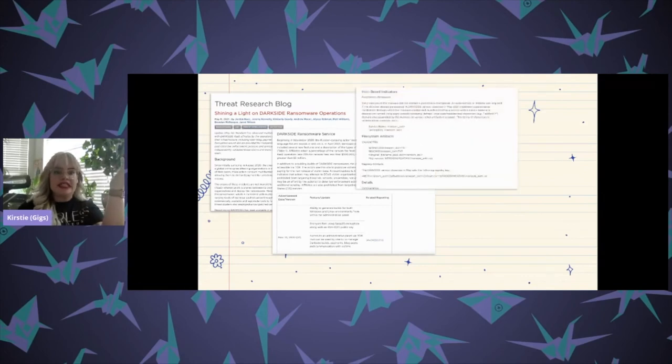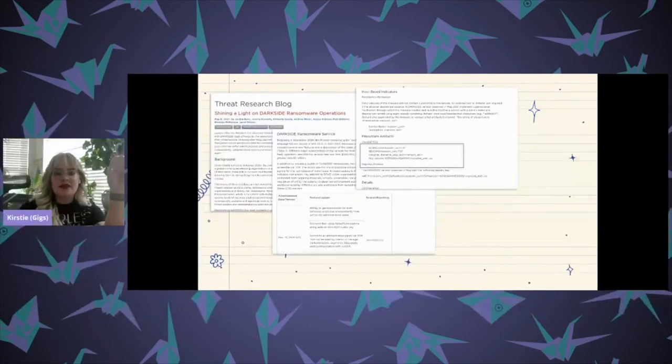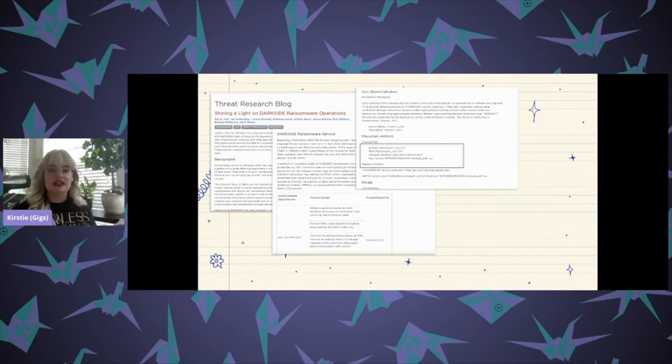And then here we see some host-based indicators that we can use to verify the visibility that we have within the network. And for instance, here we see some file names. So we would want to make sure that we're able to go across all of the hosts within our environment and list out all of the file metadata to check what those file names are. And then making sure that we can ascertain when it was created on disk, what have you. But then also we see up here, there are some persistent mechanisms. So we're going to want to check those. But in this case, it looks like it is just pulling up the ransom note. But that is a methodology based detection that you're going to want to figure out is weird service creation within your environment.